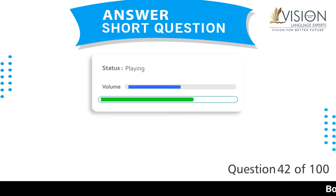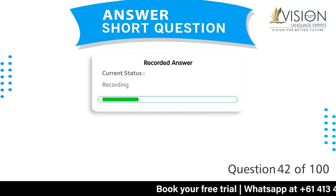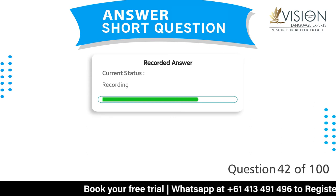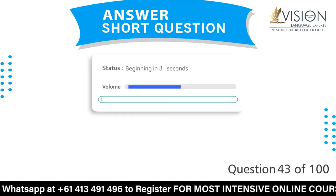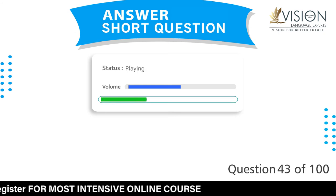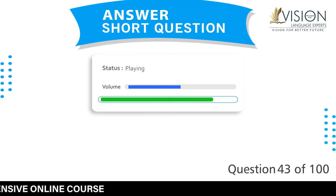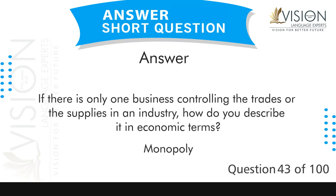What are the people who study religions called? Theologian. If there is only one business controlling the traits or supplies in an industry, how do you describe it in economic terms? Monopoly.